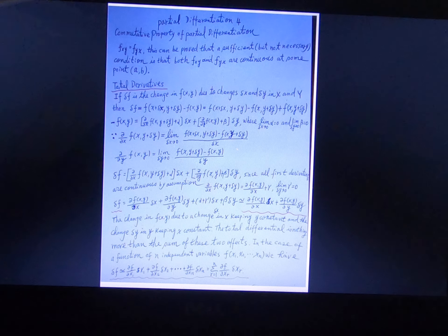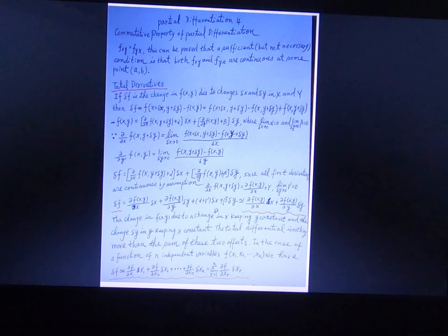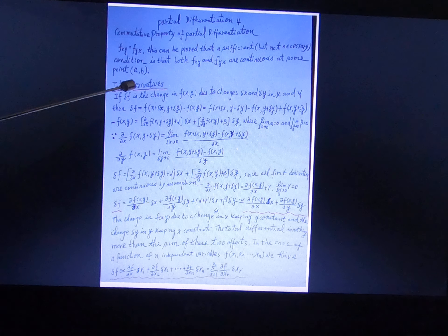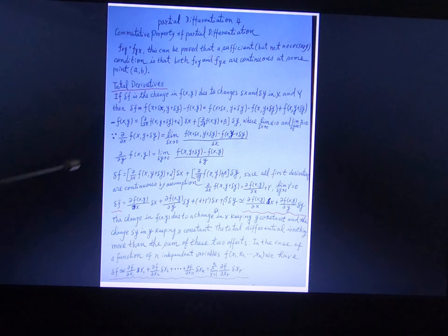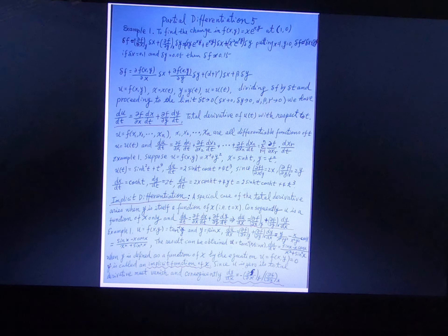That f_xy equals f_yx is the commutative property of partial differentiation. These are the total derivatives — df is the total derivative, and it equals something like shown here. These are examples.